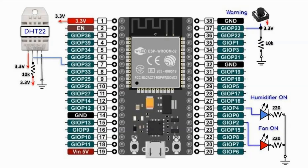A circuit diagram of the implemented system is shown here. The DHT22 sensor is interfaced to pin 32 of the microcontroller, and we have a push-button connected to digital pin 23, and two LEDs connected to pins 2 and 4.